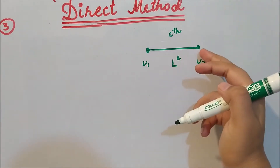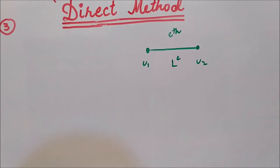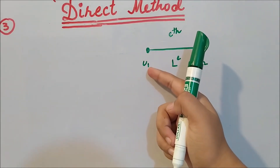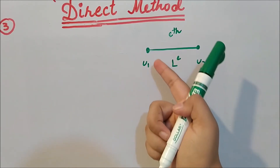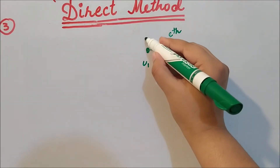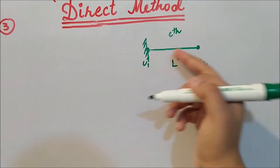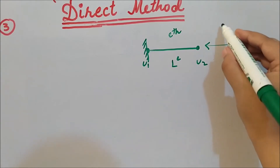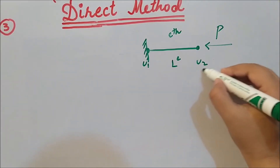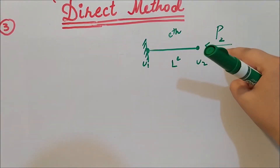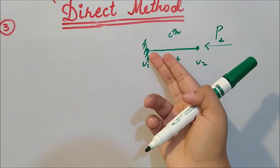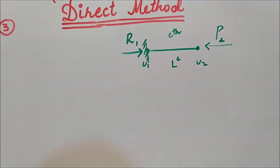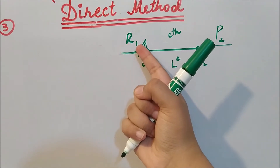We are going to fix this element at one point — specifically, we fix the element at node one. A force P2 is applied at node two. At node one, there will be a reaction force in the opposite direction, as we know from action-reaction theory. So the reaction at node one, R1, is in the opposite direction to the force P2 applied at node two.